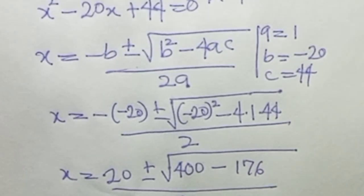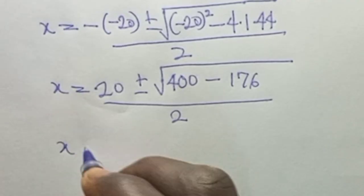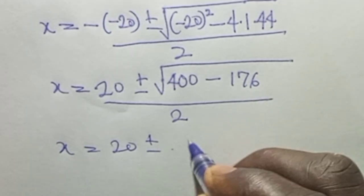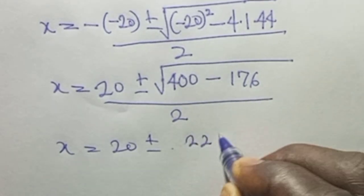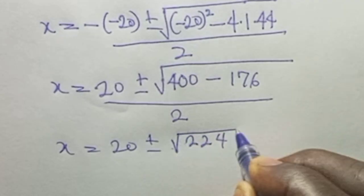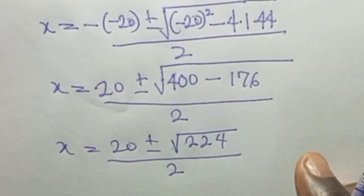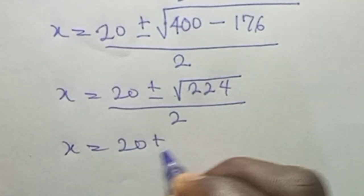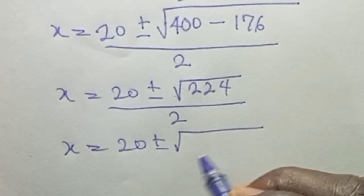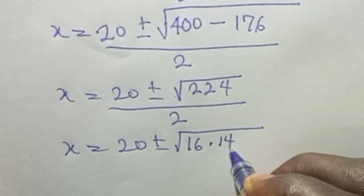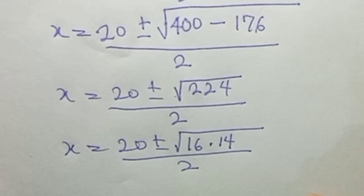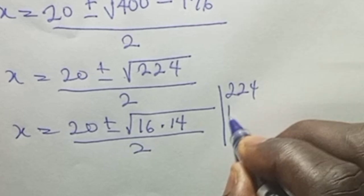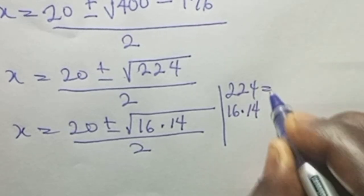This simplifies to s equals 20 plus or minus square root of 224, all over 2. Now, 224 can be written as 16 times 14.